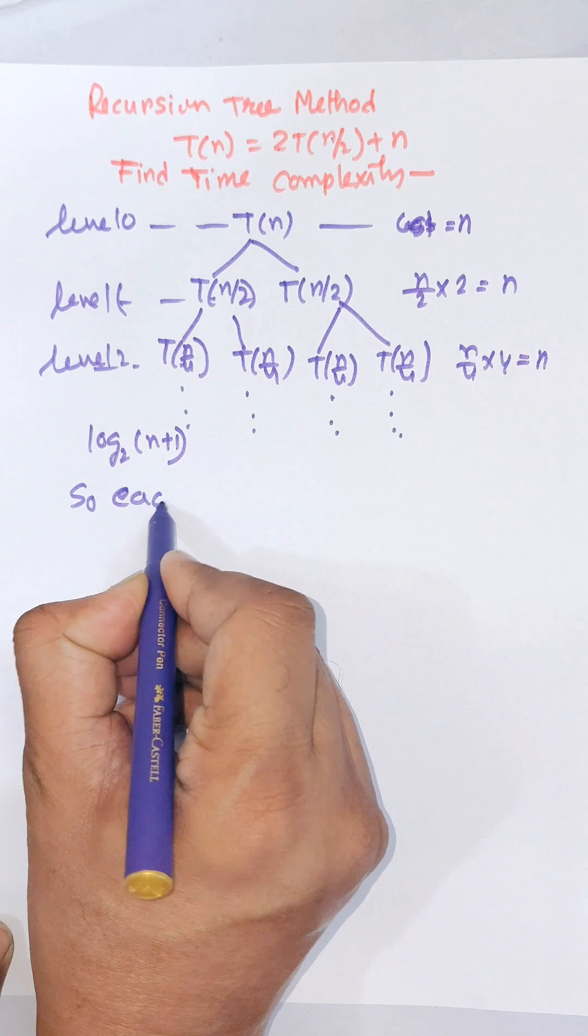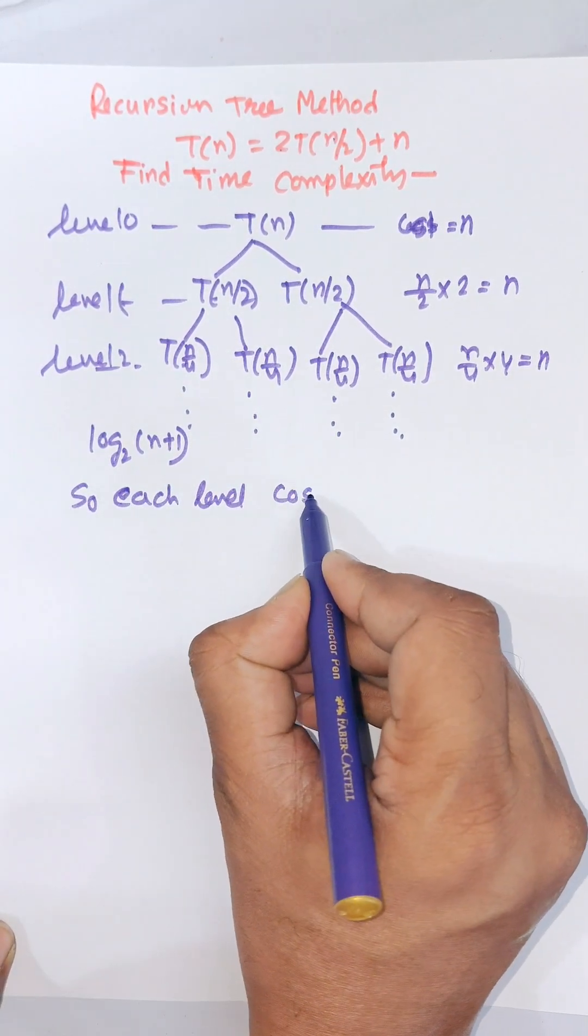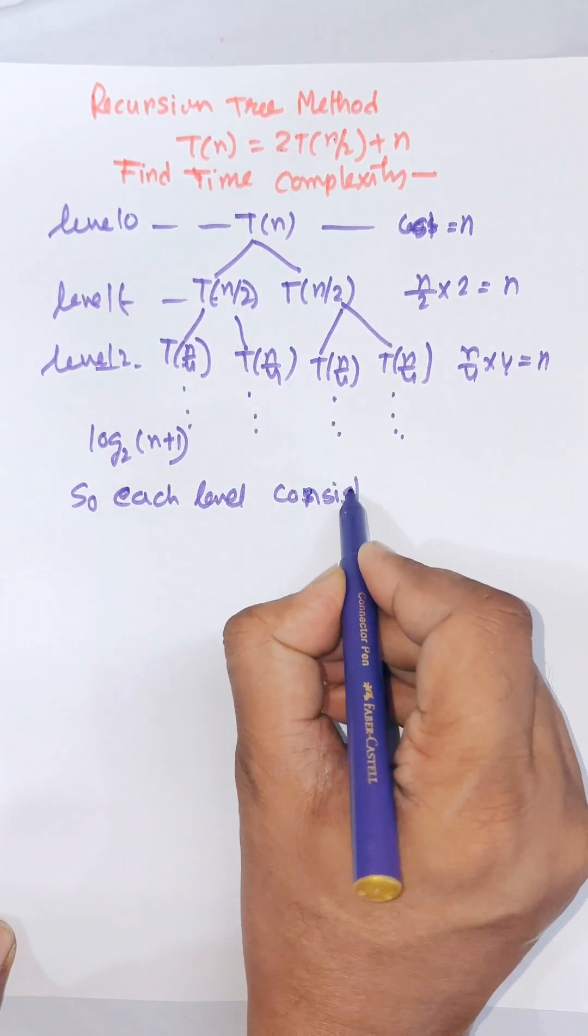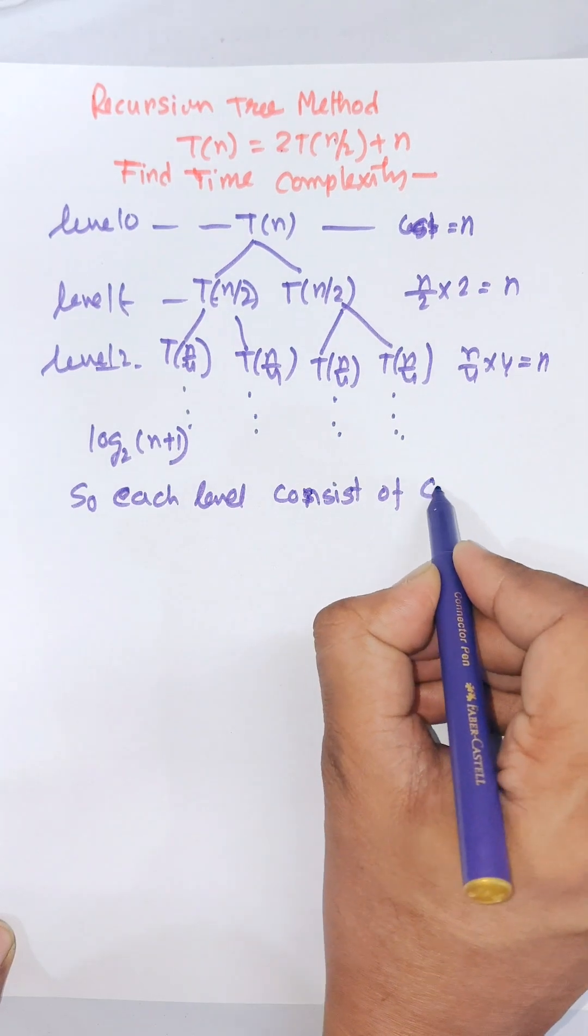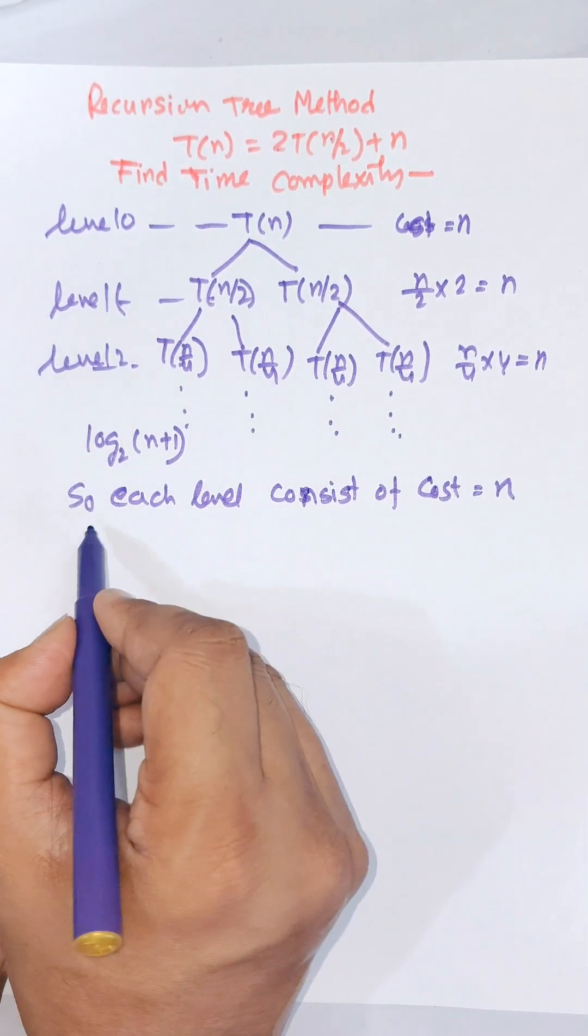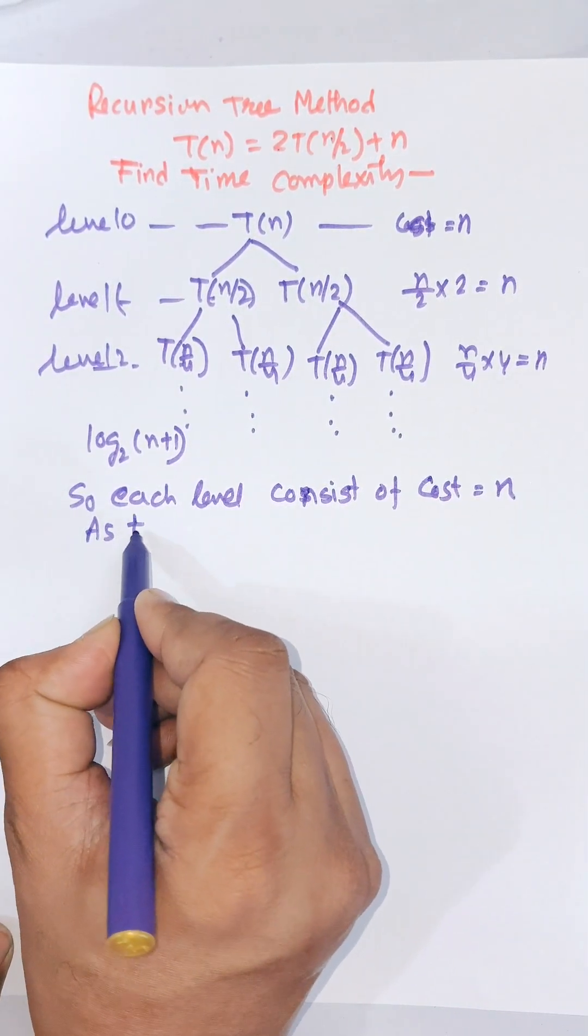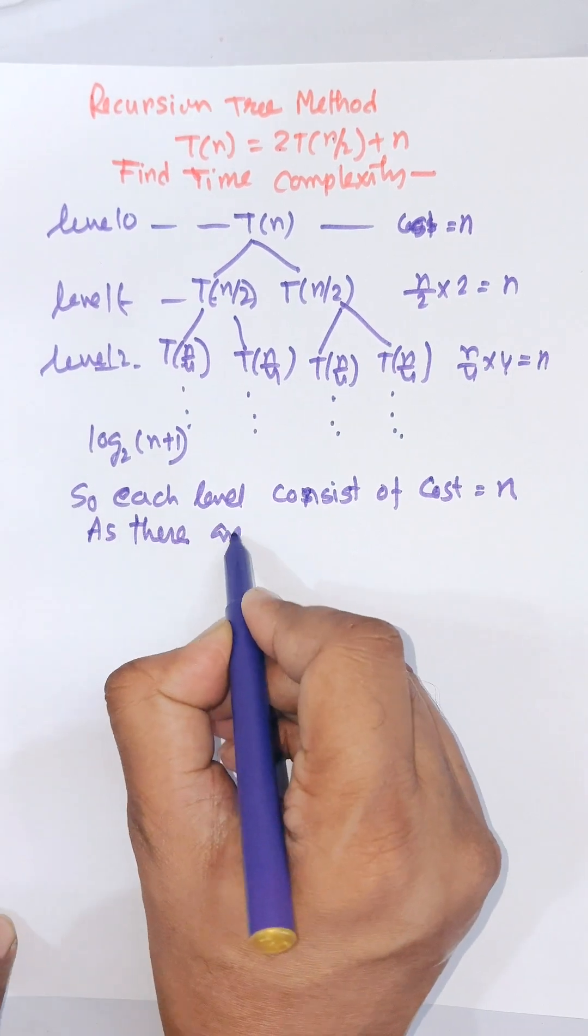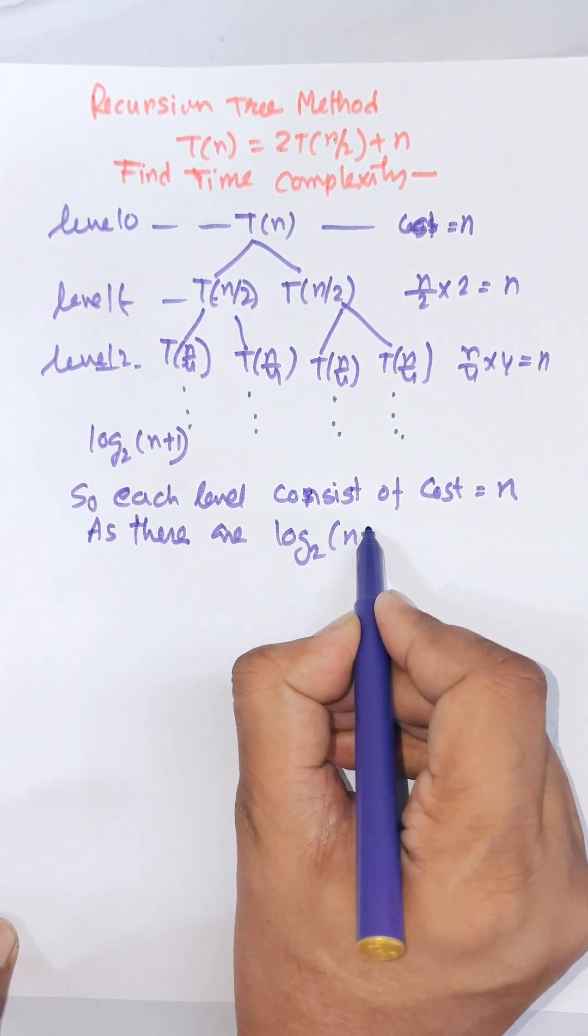Each level consists of cost of n as there are log₂(n) plus 1 levels.